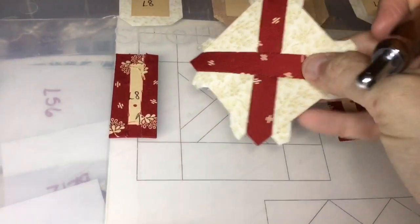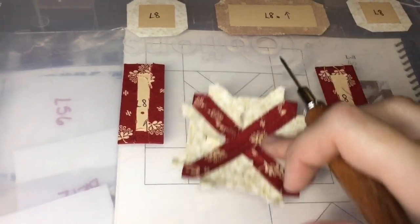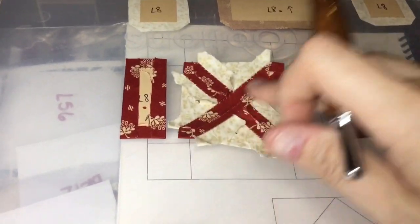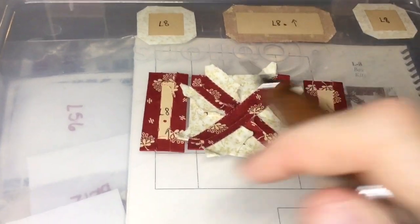My center piece is all connected. Now I've basted my outer rectangles that get attached to the center square, and I will stitch those together to form the center of my block.